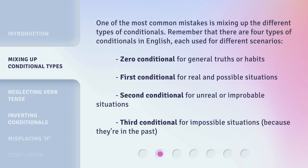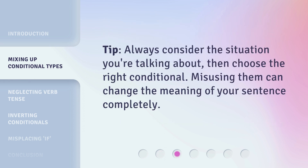One of the most common mistakes is mixing up the different types of conditionals. Remember that there are four types of conditionals in English, each used for different scenarios: zero conditional for general truths or habits; first conditional for real and possible situations; second conditional for unreal or improbable situations; and third conditional for impossible situations, because they're in the past. Tip: always consider the situation you're talking about, then choose the right conditional. Misusing them can change the meaning of your sentence completely.